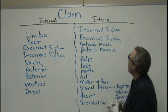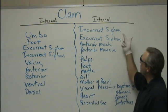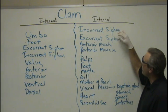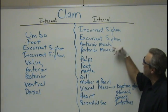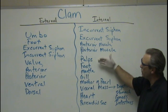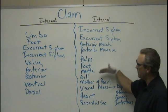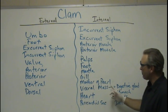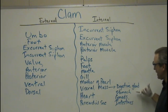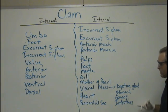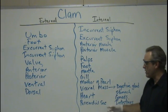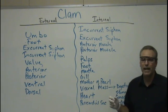Internally, we're going to look at the incurrent and excurrent siphon — these are kind of hard to see from the interior portion — the anterior and the posterior muscles, palps, foot, mantle, gill, mother of pearl, visceral mass, which will have the digestive gland, stomach, gonads, intestines, and the heart and the pericardial sac.